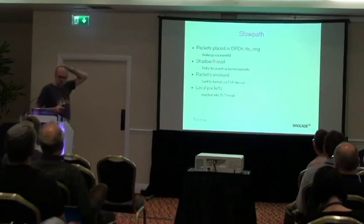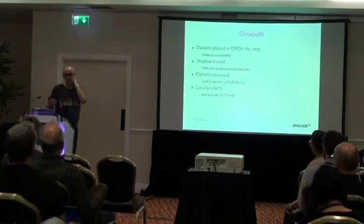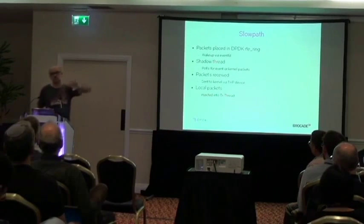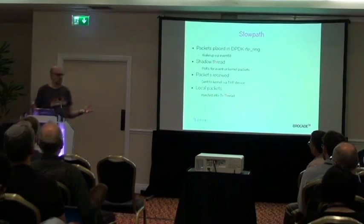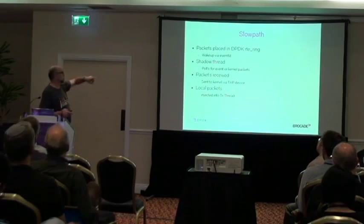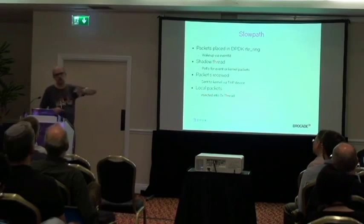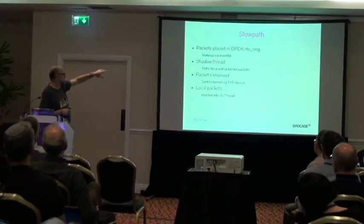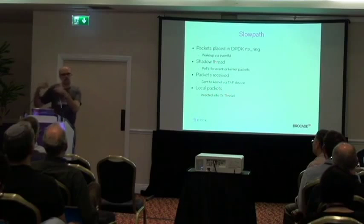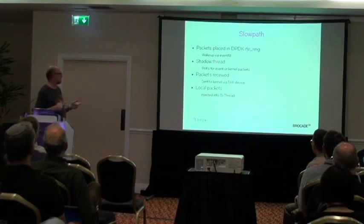The slow path, we have to take packets that are not being run through the switch router infrastructure that need to go back to Linux kernel, the classic one we always talk about is the BGP TCP connection. So what we do is we have a ring, a separate thread, feed it back to the kernel. And likewise, that thread is also responsible for taking packets from the kernel and injecting it into the data plane.